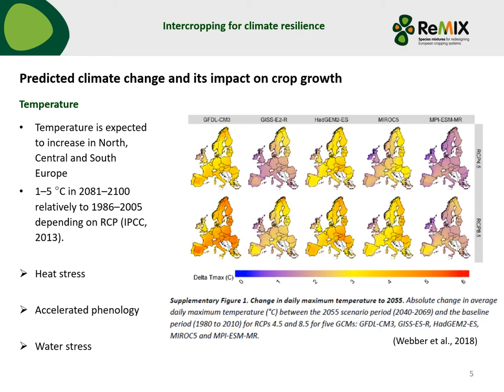Here we have two concentration pathways, 4.5 and 8.5, and the output from different climate simulation models. In general, the trend among Europe is similar; however, we can see large differences in the absolute changes predicted.